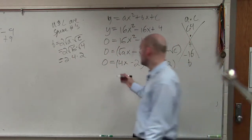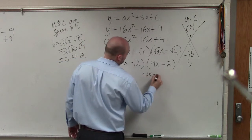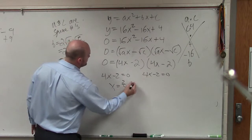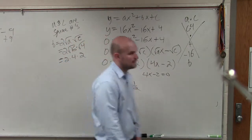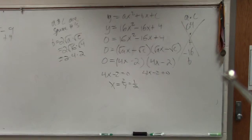So now, you can just set them equal to 0. And I'm not going to solve this. x equals 2 fourths, which equals 1 half. OK? And that's just going to be your one solution. Does that?